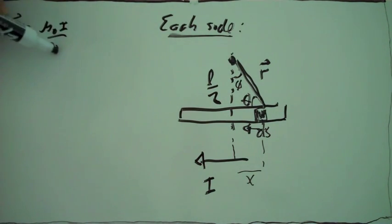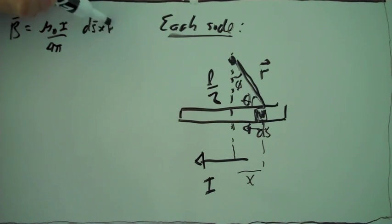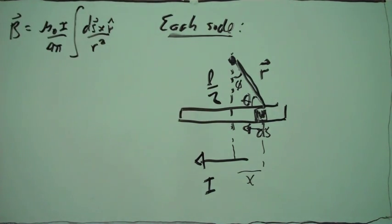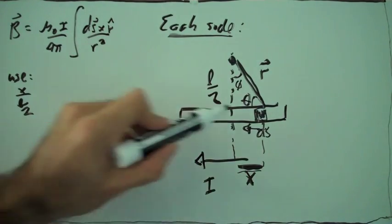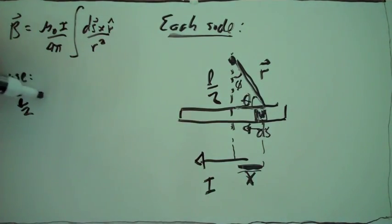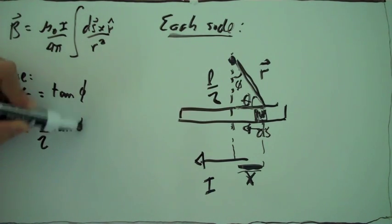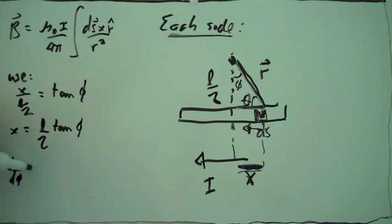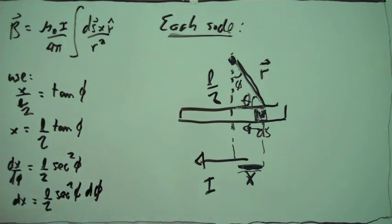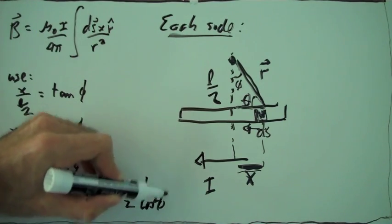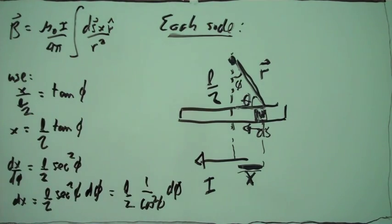The field is given by the Biot-Savart law. We can take into account that x divided by L over 2 gives us a tangent of what we call this angle phi. From this, we can derive that dx equals L over 2 times secant squared of phi d-phi. Of course, secant squared is 1 over cosine squared, so we can write it as dx equals L over 2 divided by cosine squared of phi, times d-phi.